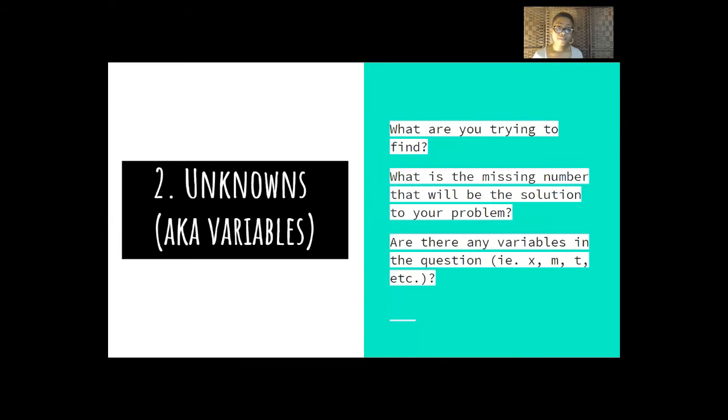The second thing we're going to look for are unknowns. Sometimes they may be in variables. Sometimes we have to make them into variables after we figure out that there is an unknown in the problem. You can ask yourself, what are you trying to find? That'll help you uncover what the unknown is. What is the missing number that will be the solution to your problem? And are there any variables in the question? You may see a variable already. It may give you a variable. X, M, T, variables like that.